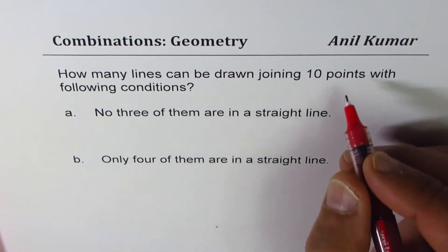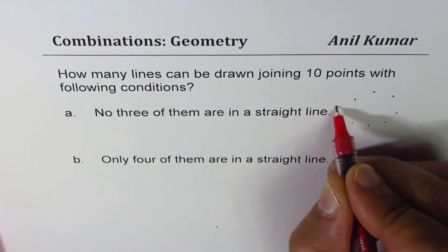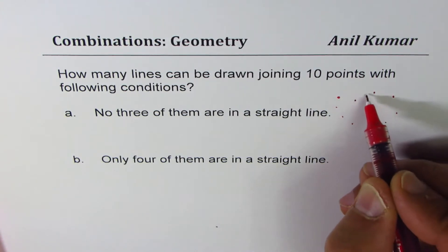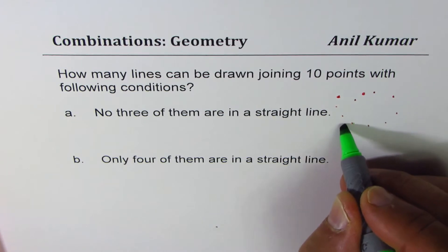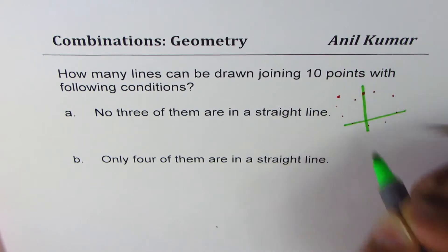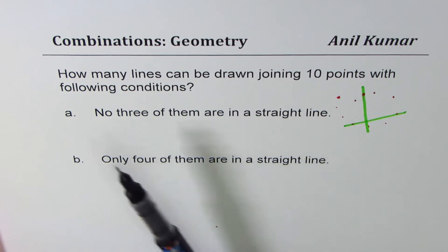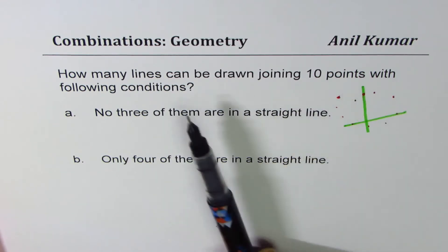In the first case, let us consider that we have 10 points: 1, 2, 3, 4, 5, 6, 7, 8, 9, 10. Now whenever you join one point with another point you get a segment. So if I join these two points we get one line segment, and those two points give another line segment. The question is how many lines can be drawn joining 10 points?